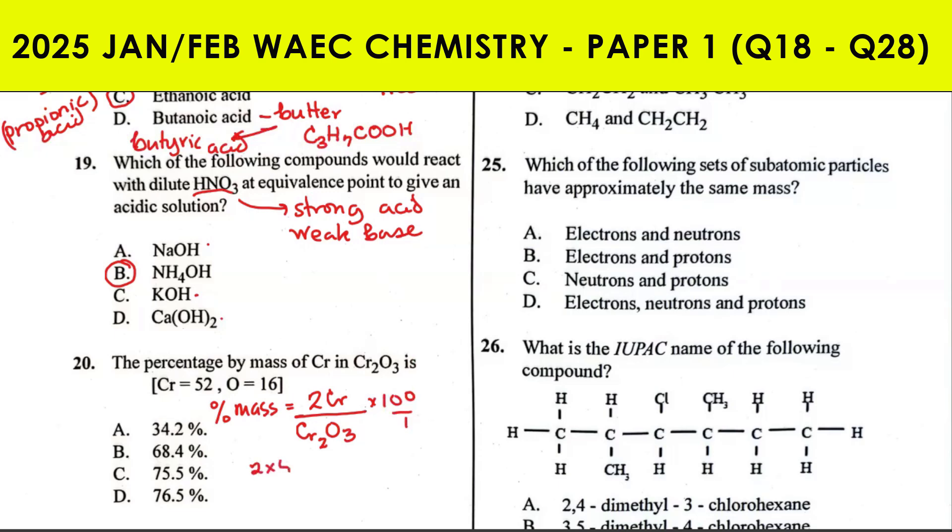That's 2 times 52 all over 2 times 52 plus 16 times 3, times 100 over 1. If you evaluate that, what do you get? That would give you 68.4%. That's 104 divided by 152 times 100, which gives you 68.4%.